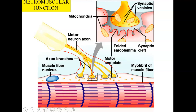Inside the synaptic vesicles you're going to have a neurotransmitter. Acetylcholine is the one we're talking about today. When a message is sent down the motor neuron, it releases the neurotransmitter found in these synaptic vesicles. Once released, it goes out into the synaptic cleft, allowing the electrical signal to travel from the motor end plate across the synaptic cleft and into the sarcolemma.